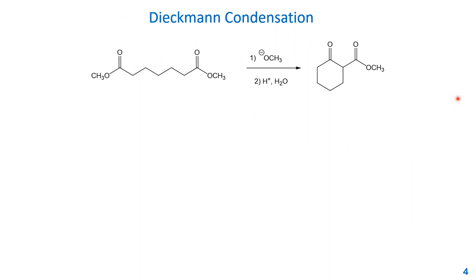Finally, we will talk about the intramolecular version of the Claisen condensation, called the Dieckmann condensation. In this case, you have a diester — two ester functional groups in one molecule — and the reaction happens within the same molecule, so it is an intramolecular reaction. We use methoxide as the base because we have a methyl ester here. The second step, as usual, requires quenching with acidic water. The product of the Dieckmann condensation is a ring system — a beta-ketoester with a ring formed.